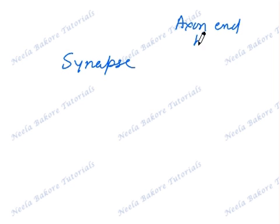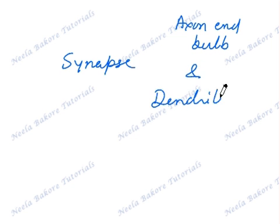A synapse is a close proximity of axon end bulb of one neuron and dendrite of the other neuron. In place of dendrite, it can also be cytone or the cell body of the neuron.